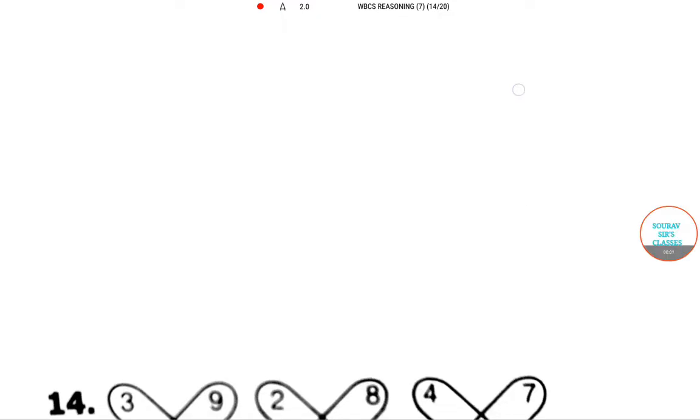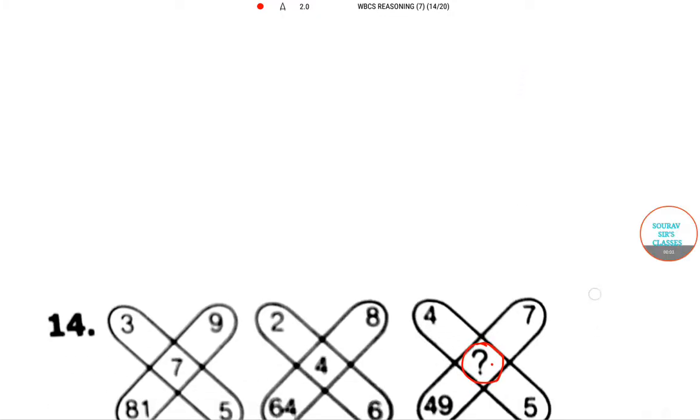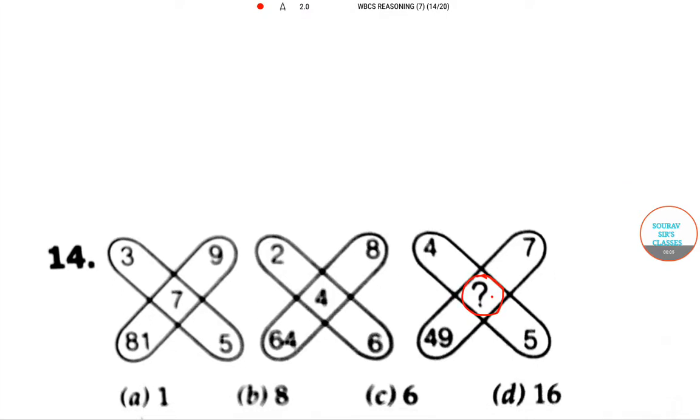Hello friends, welcome to Sorosar Classes. Today we are discussing an important chapter of reasoning: inserting the missing number. As we see in this problem, in this position, which number among these four options will be placed - that we want to find.